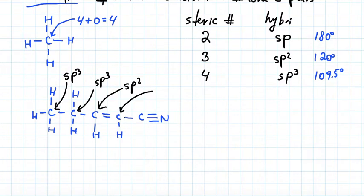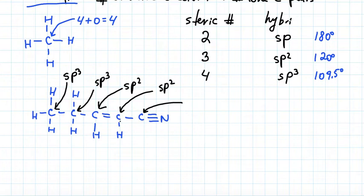Continuing: the next carbon is attached to three atoms — two carbons and a hydrogen — no lone pairs, so its hybridization is sp2. Finally, the last carbon is attached to two atoms — a carbon and a nitrogen — and has no lone pairs. Therefore its steric number is two, and its hybridization is sp.